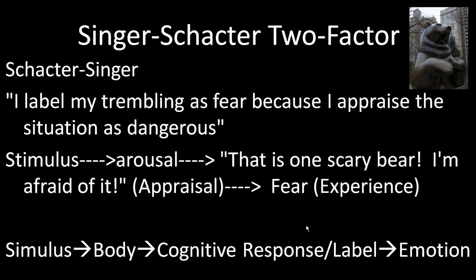More recently, you've got the Singer-Schachter two-factor theory of emotion: 'I label my trembling as fear because I appraise the situation as dangerous.' A stimulus creates physiological arousal, then you have the cognition — 'That's one scary bear, I'm afraid of it' — that's the appraisal. Then you have the fear experience. The sequence is: stimulus, body, cognitive response/label, and then emotion.